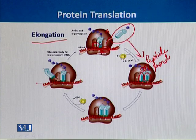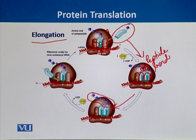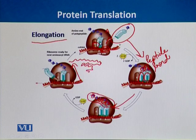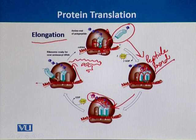This process continues as the chain is elongated. Third, fourth, and fifth transfer RNAs will come, and the chain of amino acids will be elongated until the whole protein molecule is synthesized. The main feature of the elongation process is the formation of peptide bonds between the successive amino acids being added.